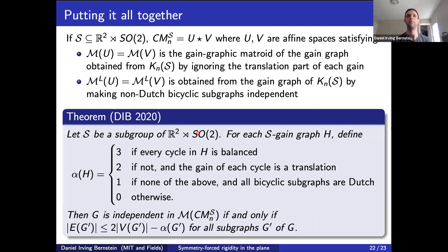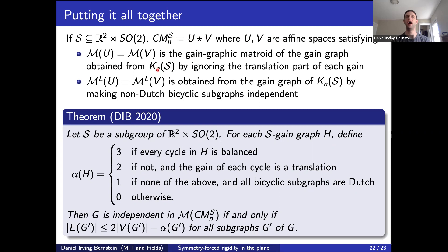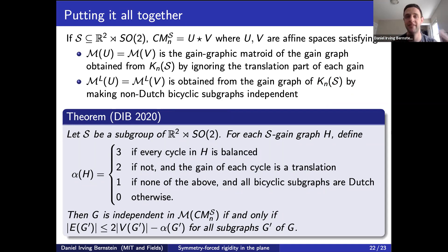Putting it all together: when S is an orientation-preserving subgroup of planar Euclidean isometries, the corresponding Cayley-Menger variety is a Hadamard product of affine spaces whose matroids are each the gain-graphic matroid of the complete gain graph obtained by ignoring the translation part of each gain. The corresponding elementary lifts are the gain-graphic matroids of this same graph, modified so that non-Dutch bicyclic subgraphs are declared dependent. Applying the Hadamard product matroid formula to this setting, the main theorem falls out directly.